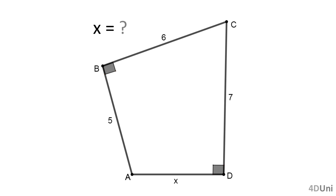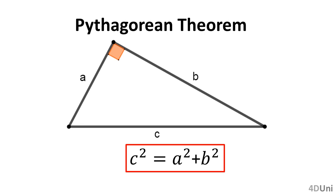Unless we already know a property in the figure that relates X with the lengths given, we may need to do a geometric construction. To solve a geometric problem, it always helps remembering geometric properties relevant to the problem. For this problem, knowing the lengths of segments AB and BC that form a 90-degree angle, it would be convenient to remember the Pythagorean theorem, which relates the lengths of the three sides of any right triangle. For the right triangle shown, we can say that c² = a² + b².